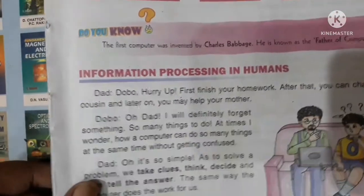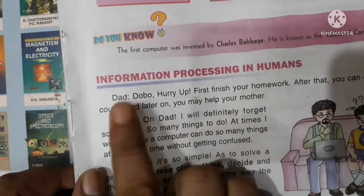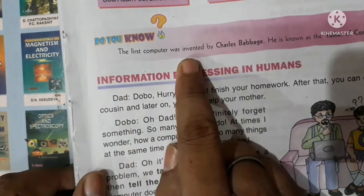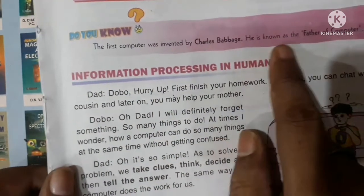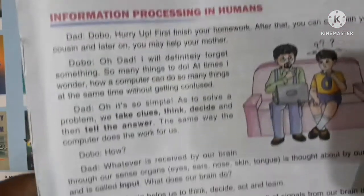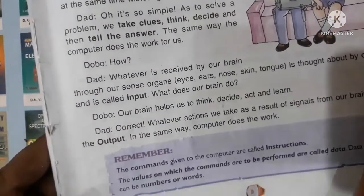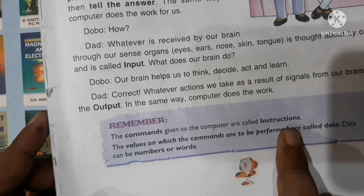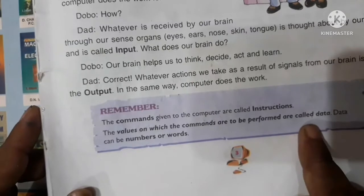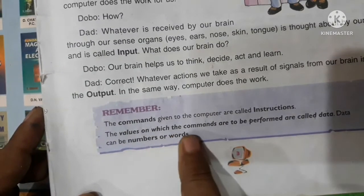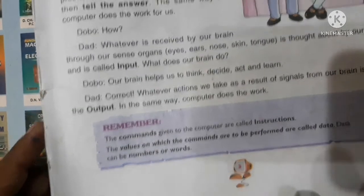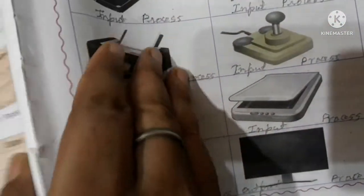Do you know the first computer was invented by Charles Babbage? He is known as the father of the computer. Next, what are instructions? The commands given to the computer are called instructions. What is data? The values on which the commands are to be performed are called data. It can be numbers or words.